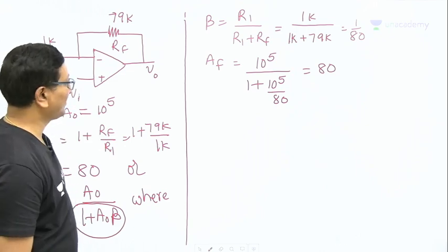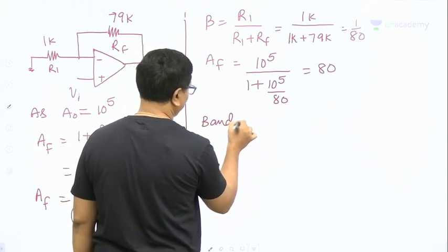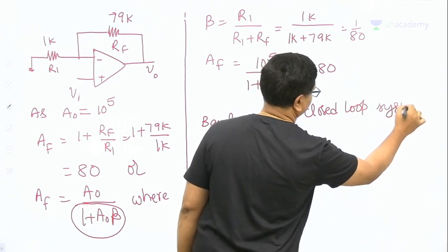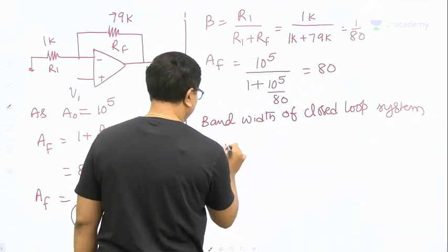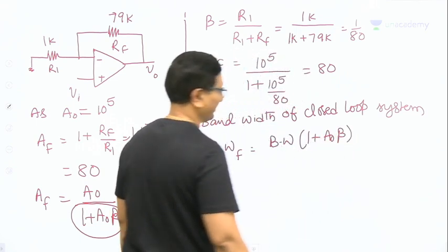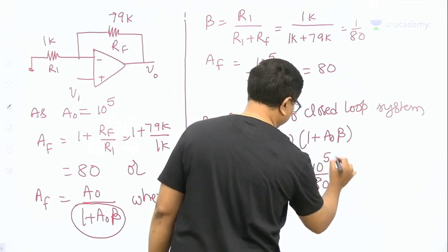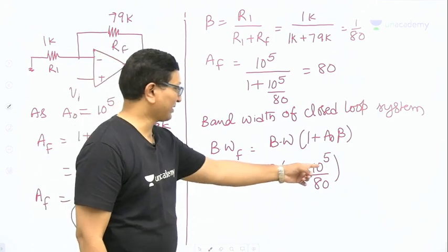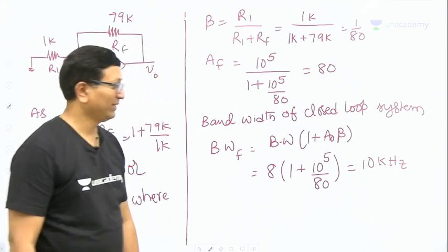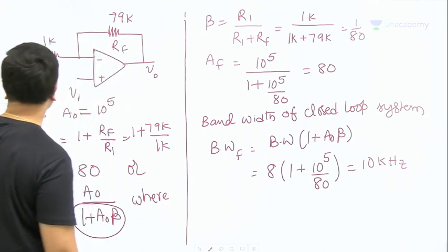The gain is decreasing by desensitivity times, which means the bandwidth has to increase by desensitivity times. What is the bandwidth of a closed-loop system? The bandwidth with feedback is given by bandwidth without feedback times (1 + Aβ), which equals 8 Hz × (1 + 10^5/80). Neglecting 1 compared to this, it is 10^5/80 = 10^4, or 10 kHz. How much the gain is decreasing, the same amount the bandwidth will increase.